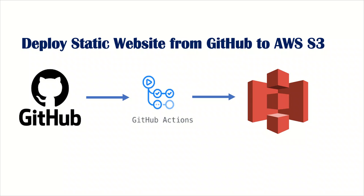Hi everyone, welcome to another DevOps tutorial. In this tutorial we are going to see how to deploy applications from GitHub to AWS using GitHub Actions. To demonstrate this, we will be deploying a simple static website from GitHub to AWS S3. So let's get started.